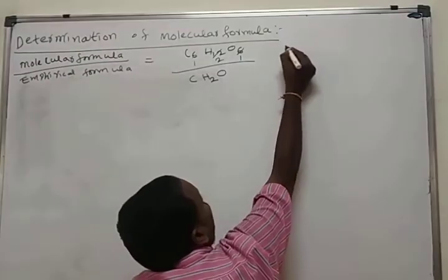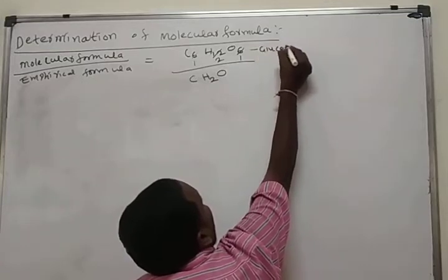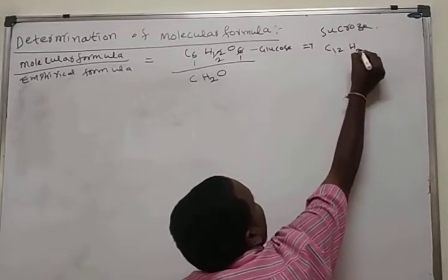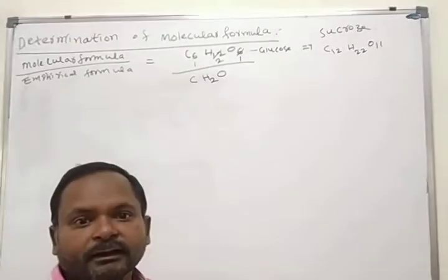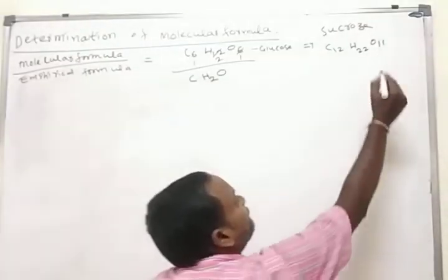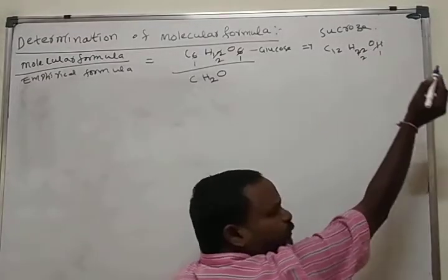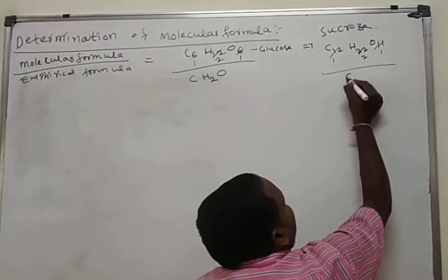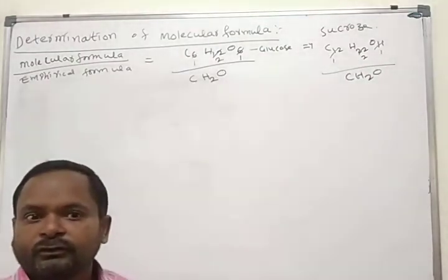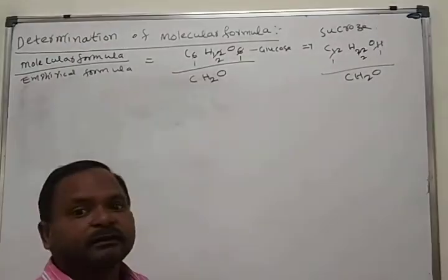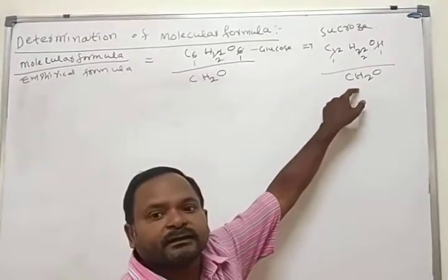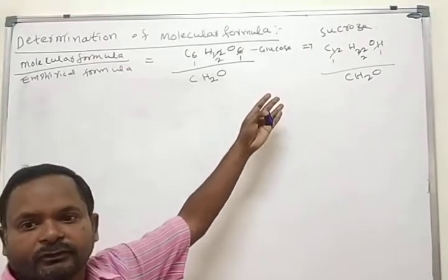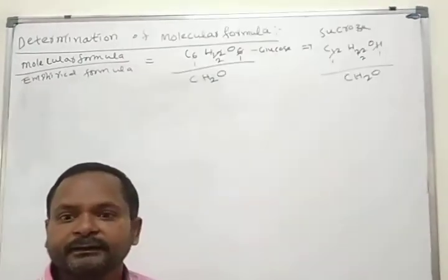For example, take sucrose. The molecular formula of sucrose is C12H22O11. Here the simplest ratio is approximately 1:2:1, which means this is the simplest form. So the empirical formula of sucrose is CH2O — that is the empirical formula of sucrose.